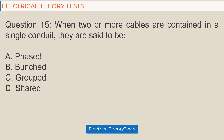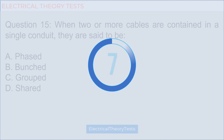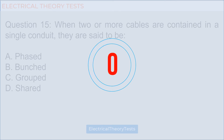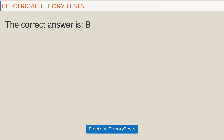Question 15: When two or more cables are contained in a single conduit, they are said to be — a) phased, b) bunched, c) grouped, d) shared. The correct answer is b) bunched.